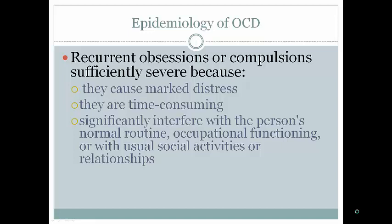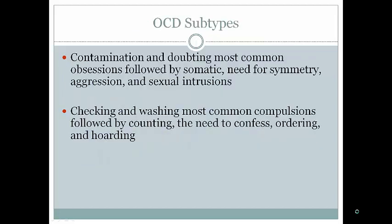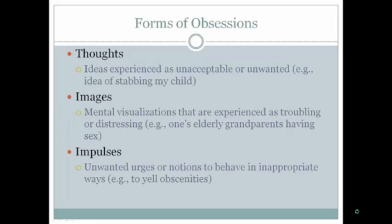For example, if you have to check the house 50 times before leaving and you're late for work every day, that significantly interferes with your functioning. Different types of OCD include contamination, doubting, somatic, need for symmetry, aggression, and sexual intrusion. Checking and washing are the most common compulsions, followed by counting, need to confess, ordering, and hoarding. Obsessions are thoughts or ideas experienced as unacceptable or unwanted — such as the idea of stabbing one's child — which are very distressing because they're incongruent with the person's self-view.